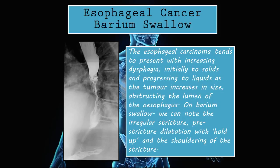Esophageal cancer on barium swallow. Esophageal carcinomas tend to present with increasing dysphagia, initially to solids and progressing to liquids as the tumor increases in size, obstructing the lumen of the esophagus. So the patient will present with dysphagia first to solids and then to liquids as the disease evolves. On barium swallow we can note the irregular stricture and pre-stricture dilation with hold-up and shouldering of the stricture.